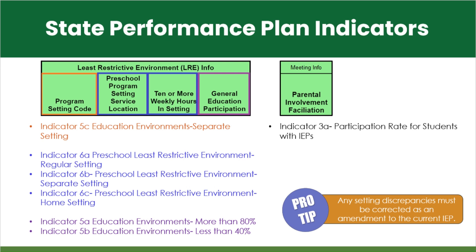Other data in the 1621 report is directly tied to the state performance plan indicators. Least restrictive environment should be reviewed for the correct program setting — 400 or 500 are the most common settings for students age 5 to 22. General education participation is the reported percentage of time the student is included in general education. Parental involvement facilitation is the parental response taken from the IEP signature page. An amendment to the current IEP should be created for these corrections.